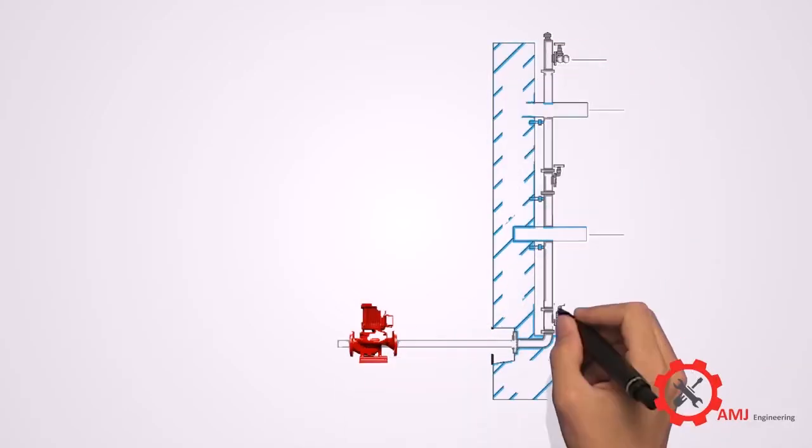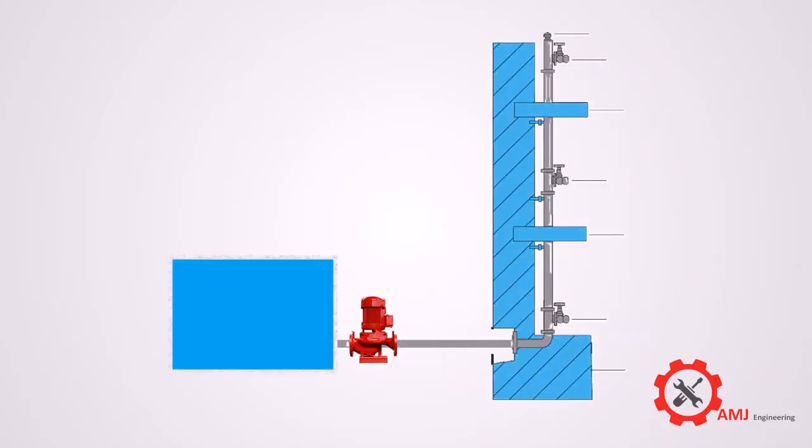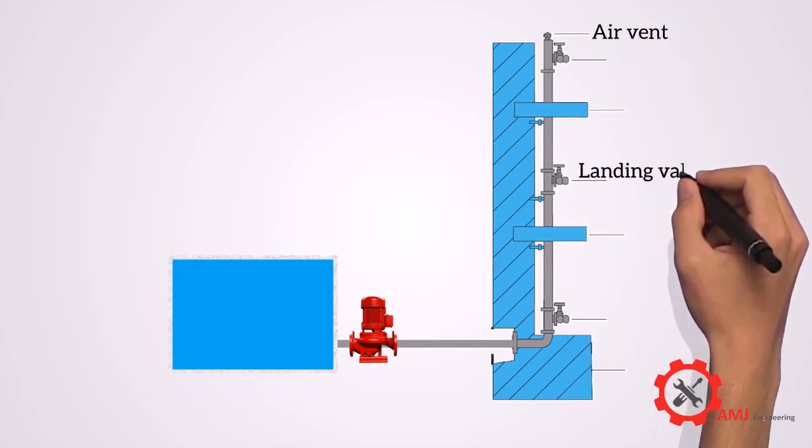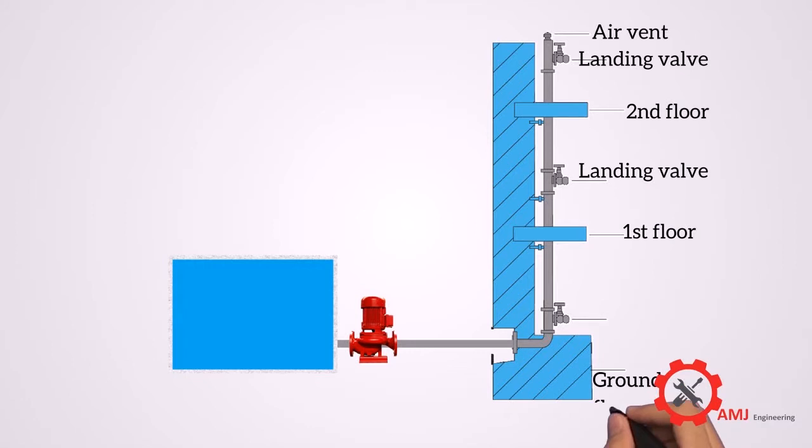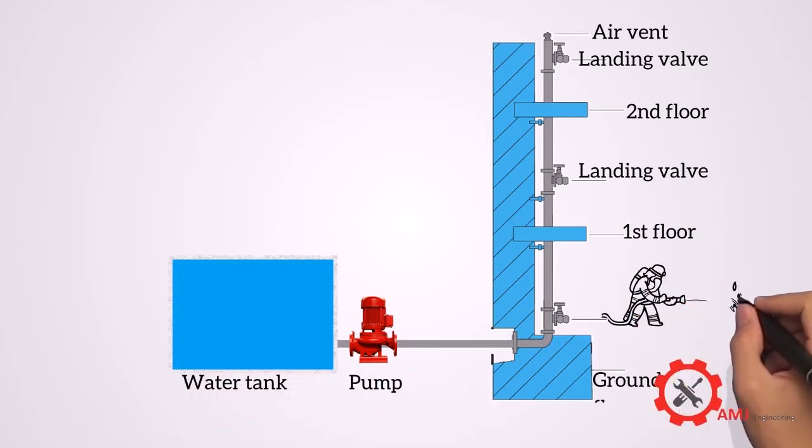In this lesson, we are going to learn how to size the pipe network of a standpipe or firehose system. Here you can see a typical wet standpipe system.